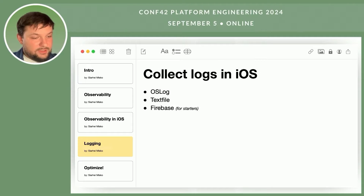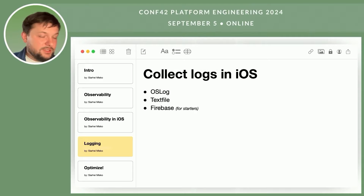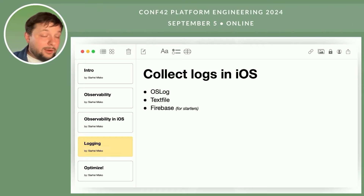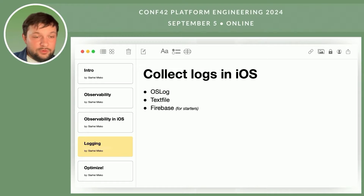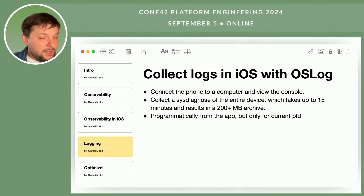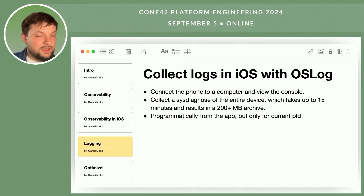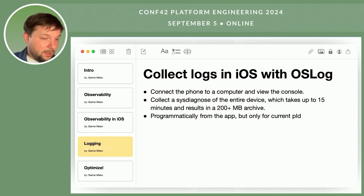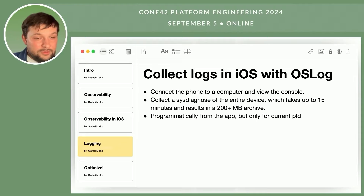How can you write logs in iOS? First, there's Apple's OS Log — a powerful tool that includes many optimizations for fast performance, with deep integration into the operating system and support for user privacy tools. However, for other purposes it may be inconvenient, as these logs can be difficult to access. There are three ways for iOS: connect the phone to a computer and view the console; collect a sys-diagnose of the entire device, which takes up to 15 minutes and results in a 200+ MB archive; or programmatically from the app — but with a significant drawback: you can only get logs from the current process, meaning you can't retrieve logs from extensions or from previous launches of the application.